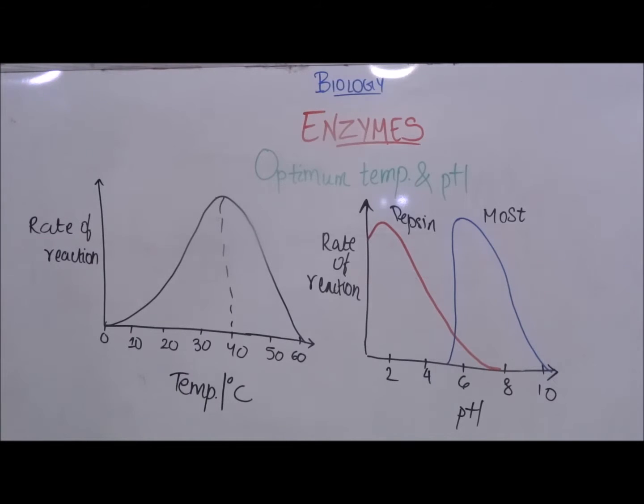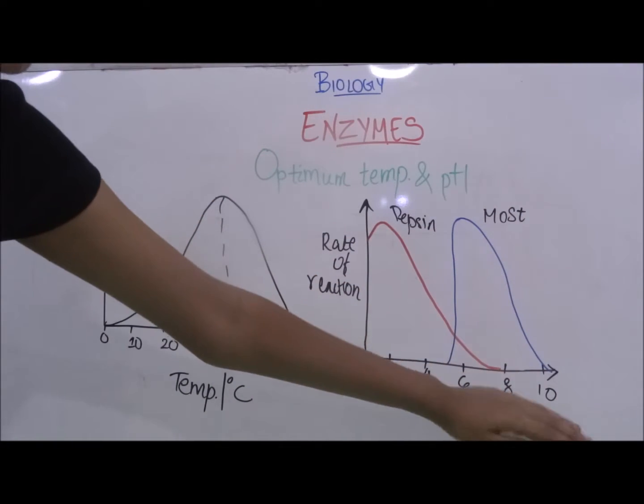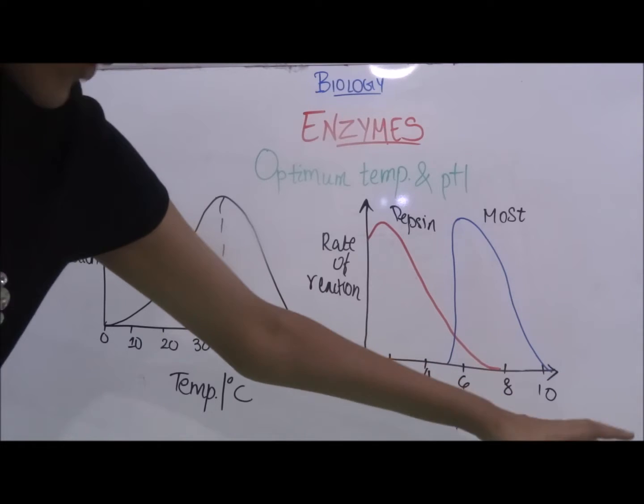For most other enzymes the optimum pH is pH 7. So it increases until it reaches pH 7 and then continuously decreases until it reaches pH of 10.